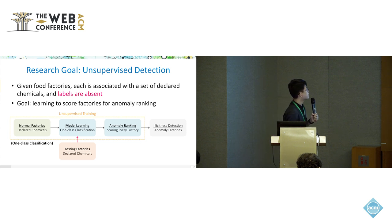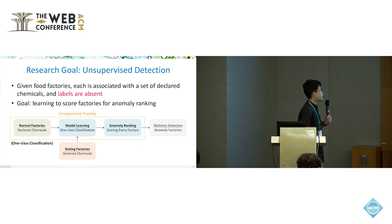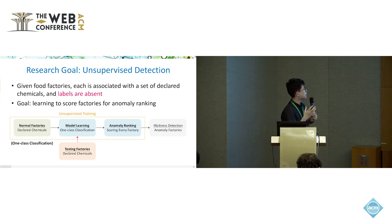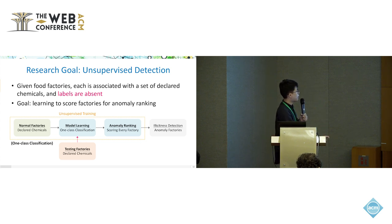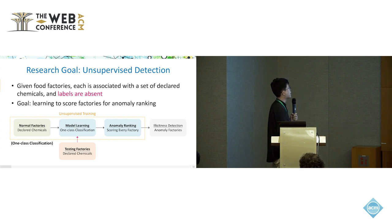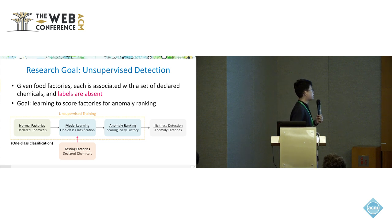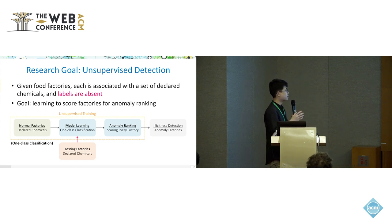The second component is factory representation learning. It uses a GRU layer to capture the sequential behavior of each factory's declared chemical sequence. The motivation is that the sequential declaration of chemicals by a food factory may yield clues that differ between illicit and licit operations.